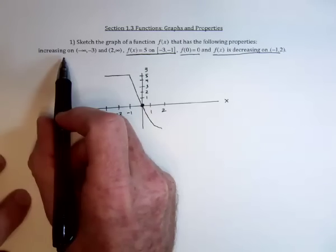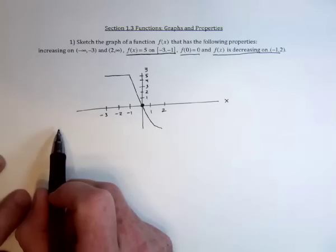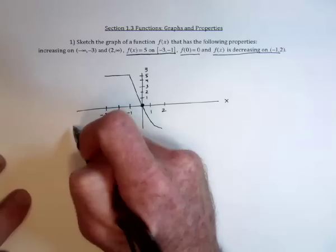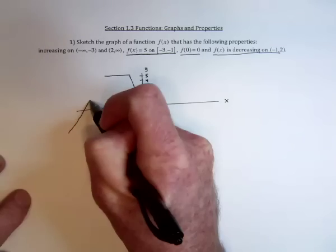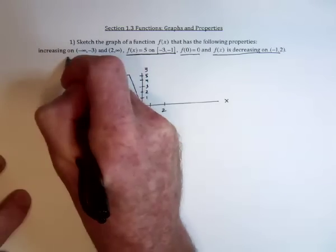And it's increasing from negative infinity to negative 3. So increasing would be going up, going up, going up. That takes care of this.